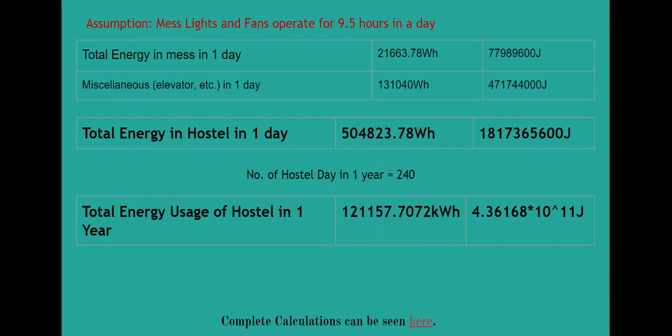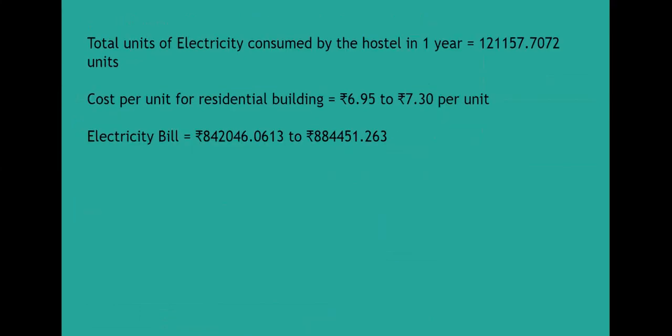This is how we get the total energy consumption in the hostel for one day. The total number of working days in the hostel is 240. Considering that, we get a number for total energy consumption in one year, which is then multiplied by the cost of one unit. We end up with an electricity bill range of approximately ₹8,42,000 to ₹8,84,000 depending on the value considered.